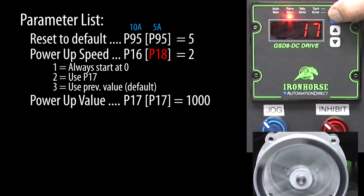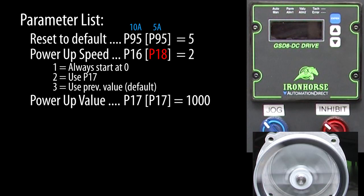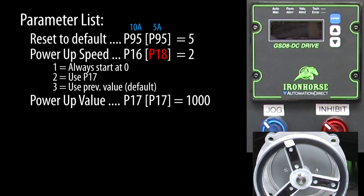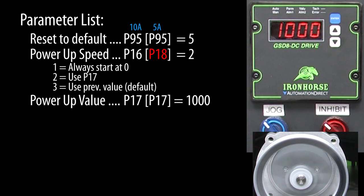We don't actually have to exit the parameter settings. As soon as we hit enter to accept the value, it was done. We are currently at 360 RPM, so if I power down the drive, give it a second or two, and then bring it back up again, it goes directly to 1000 RPM. Exactly what we asked for.